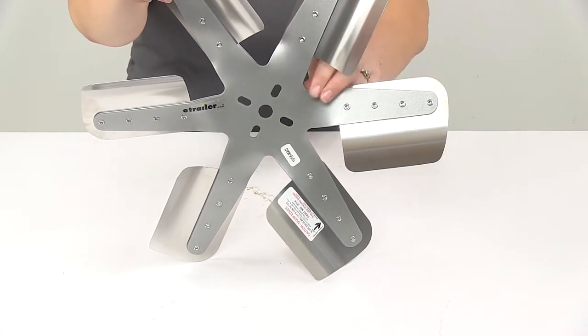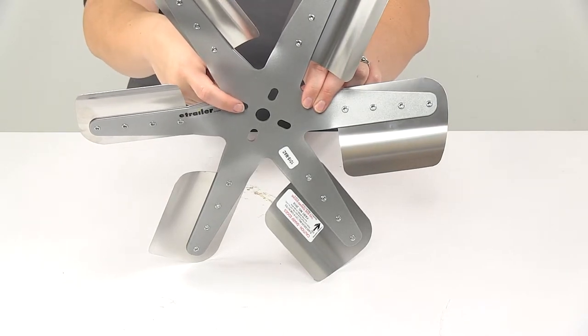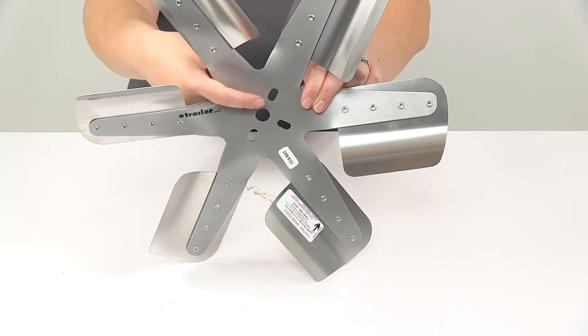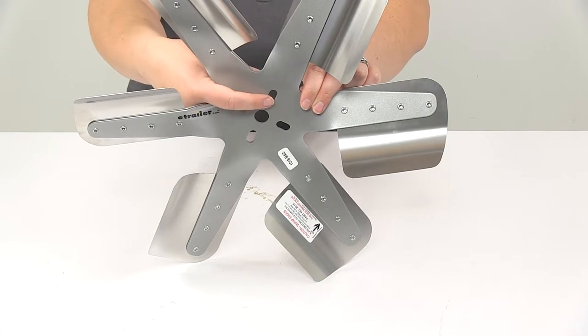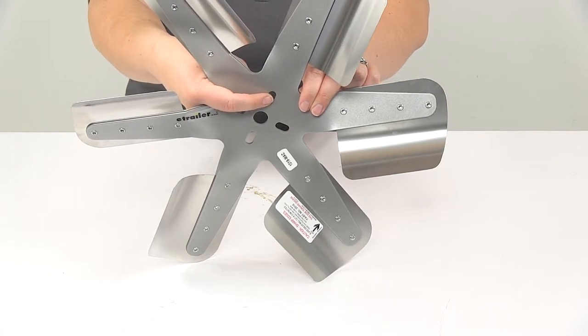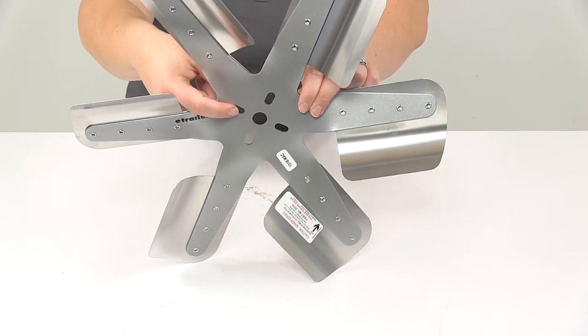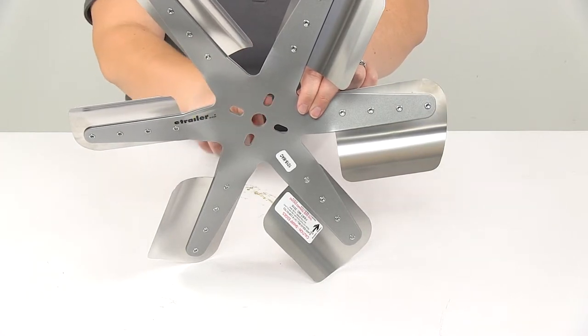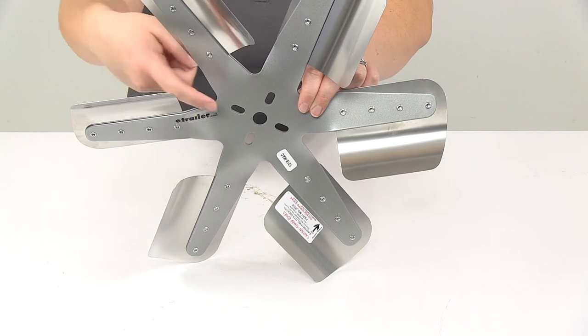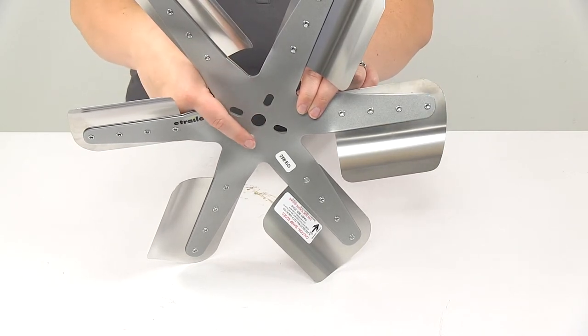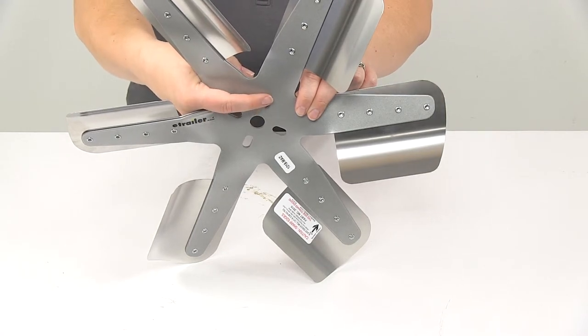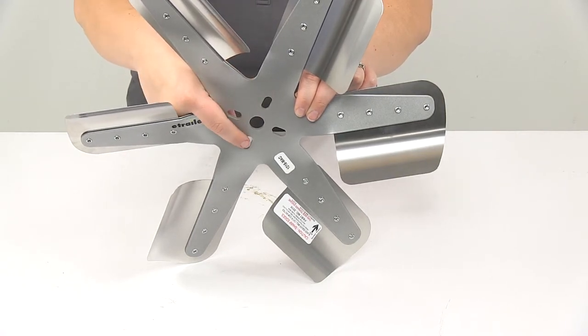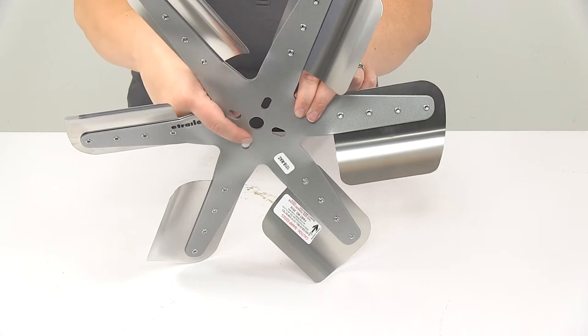And our bolt pattern, if you go from one to the other, sort of diagonal there, it's going to be about 1 and 3/4 of an inch from the center to center. Going long ways or across, that's going to be 2 and a half inches from the far edge to far edge inside that slot there.